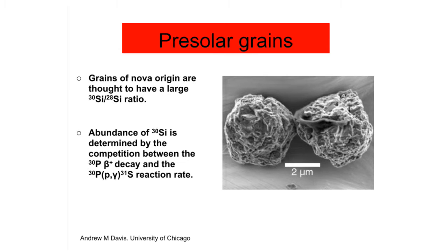In Nova there's probably just two or three reactions we still don't know well enough, and this is the one we don't know well enough — the phosphorus-30 p-gamma reaction. So to try and understand it briefly, we'll look at the nuclear chart.